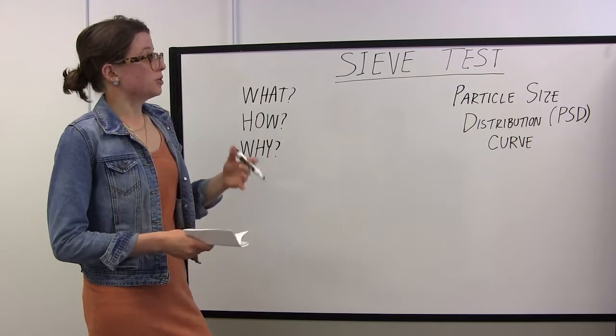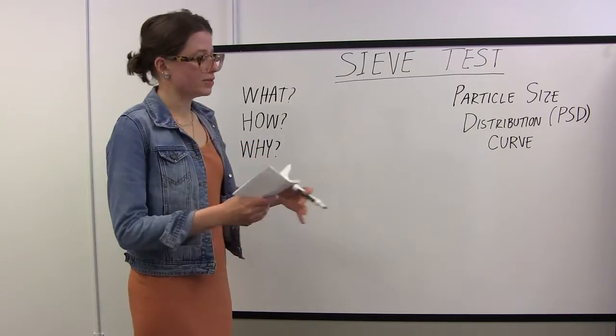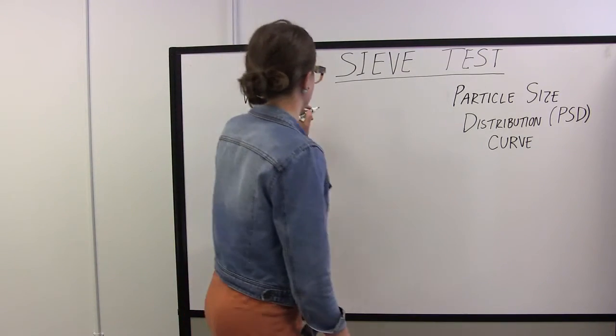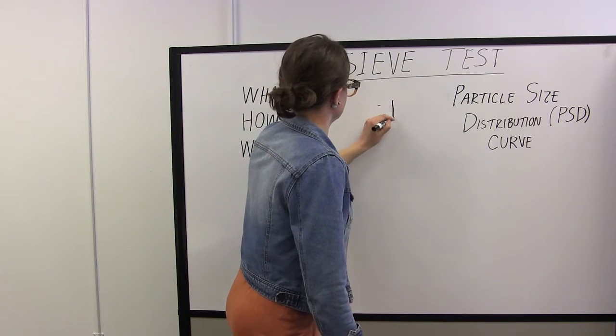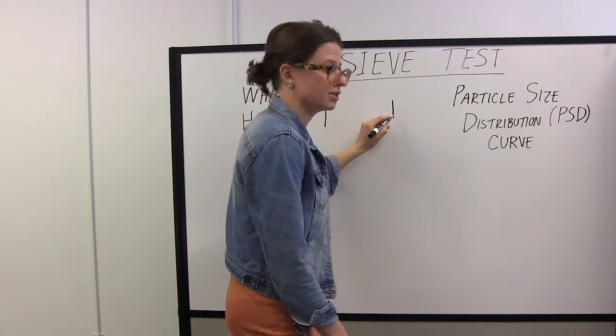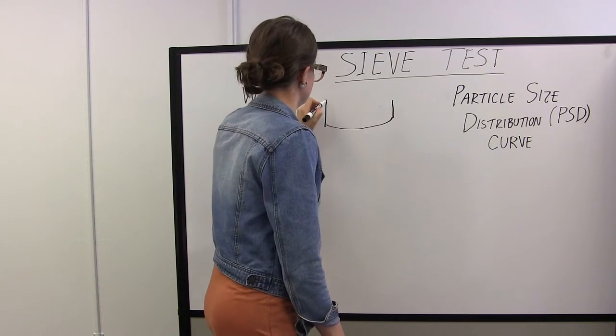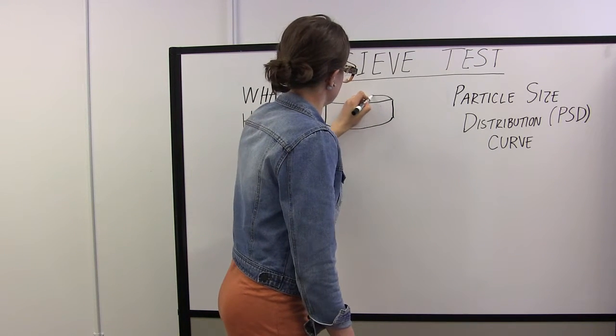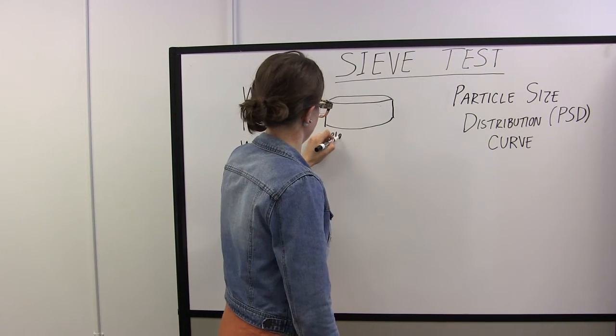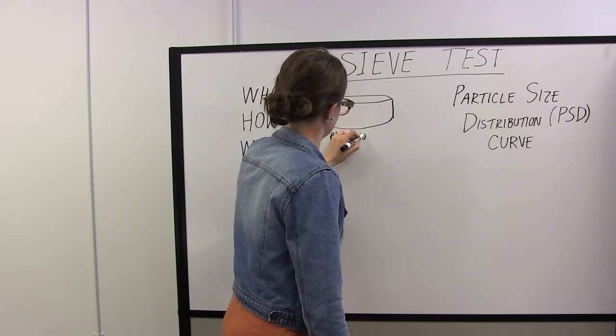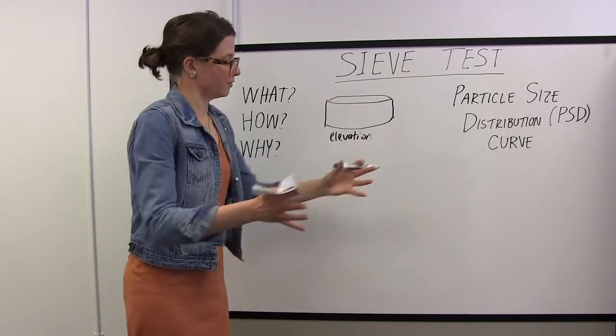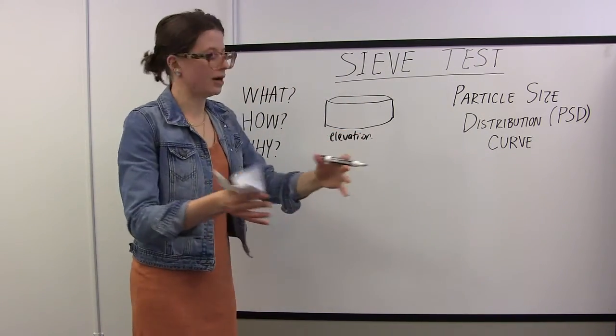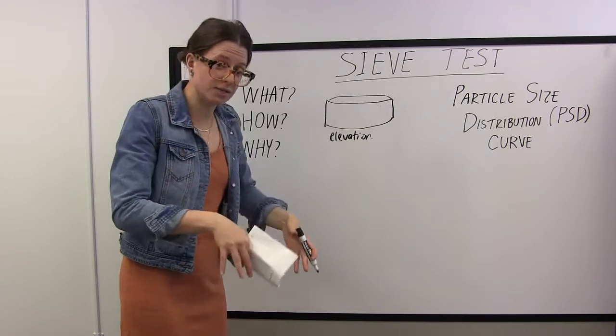To actually run a sieve test you have a series of sieves and they are typically six to ten inches in diameter, just a metal ring. If we look at an elevation view it's just sort of this circle of metal. But if you look down into the sieve, an overhead view...